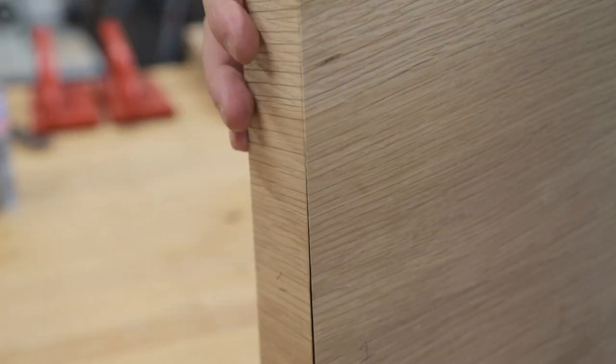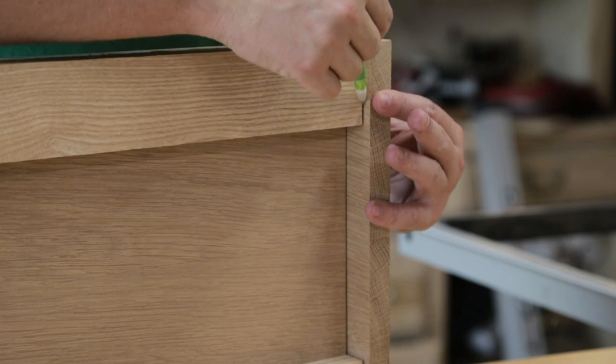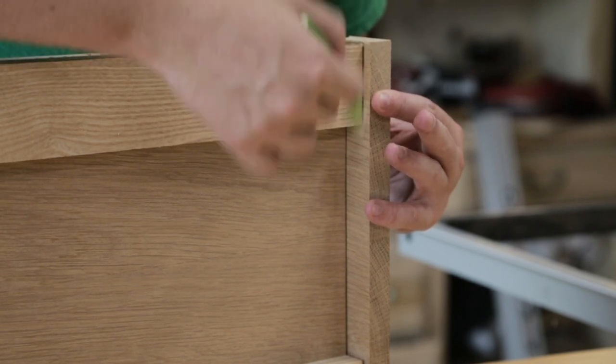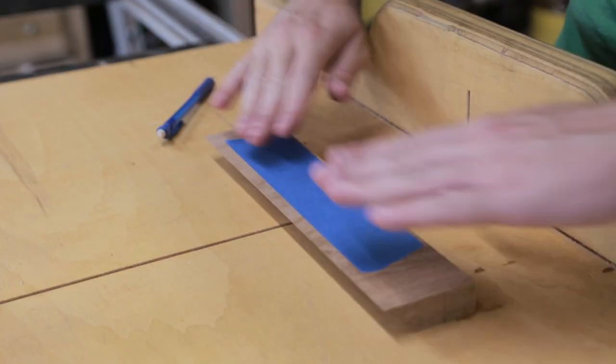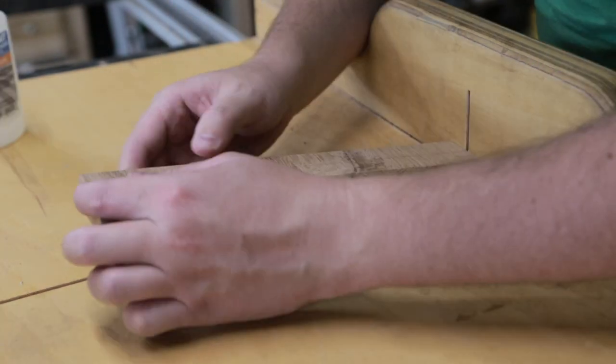After these are attached, I can trim the edges so they are flush. I used painters tape and a crosscut sled to hold them in place because I felt this was safer than using the fence on my table saw.